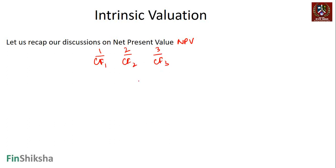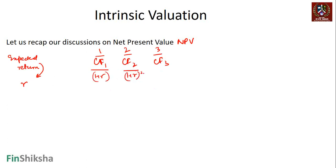The next idea is to find out the present value of each of these cash flows. We have what is called the expected return from the stream of cash flows — let's name that r. Each cash flow gets discounted by the rate r for the number of years the cash flow is expected.